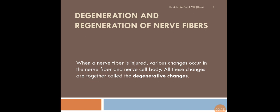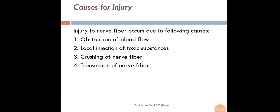When a nerve fiber is injured, various changes occur in the nerve fiber and nerve cell body. All these changes are together called the degenerative changes. The causes for injury: the first cause is obstruction of blood flow, second is local injection of toxic substances, third is crushing of nerve fiber, and fourth one is transection of nerve fiber. All these things can cause Degeneration of Nerve Fiber.